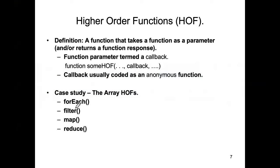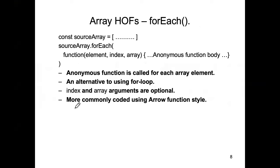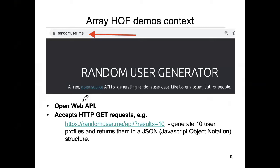There is a web API called the Random User API. If you call it, it randomly generates user profiles — objects containing personal properties like name, address, age, date of birth, etc. It's a useful API for messing around with JavaScript. We're going to be using it in the rest of these slides. You communicate with it via an ordinary HTTP request with a query string — for example, requesting 10 randomly generated user profiles.